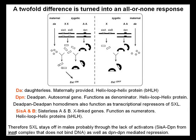Sisterless-a is maternally provided and is X-linked. Deadpan is an autosomal gene — either the male or the female can pass this on — and it functions as a denominator. Deadpan homodimers also function as transcriptional repressors of sex lethal. SysA and SysB are X-linked genes that function as numerators. Therefore, sex lethal stays off in males through deadpan-deadpan mediated repression.